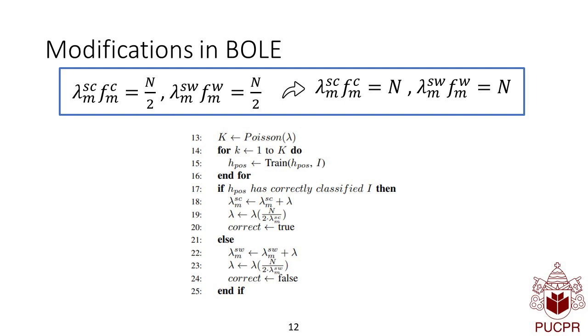In the original, we weight the correct classifications and wrong classifications by half of the instances seen so far.